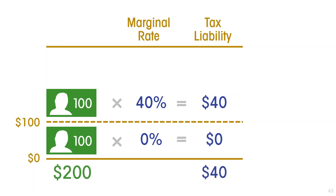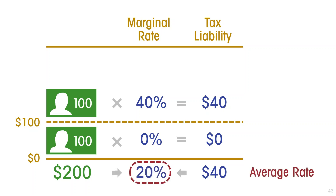But you are paying $40 of tax on a total income of $200 a year. That means your average tax rate on $200 of income is 20%. Let's extend the example.